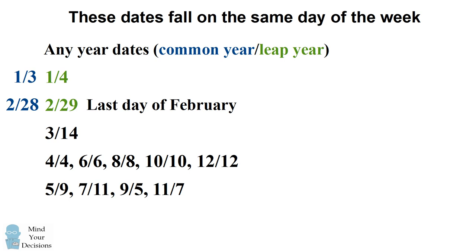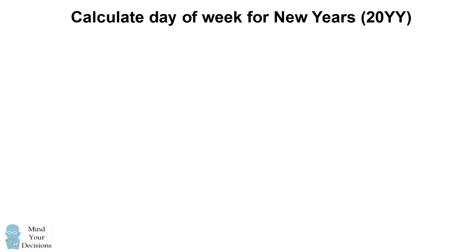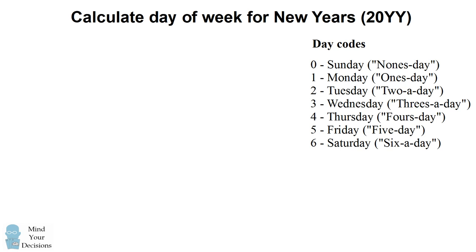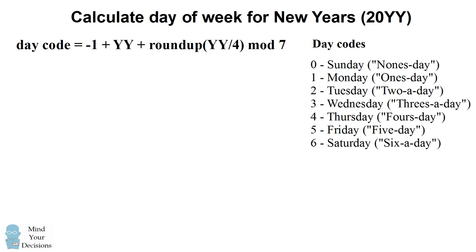In order to apply this method, you need to know when January 3rd or January 4th falls on, so there's a formula for that. I like to think about the day of the week that New Year's falls on, then make the adjustment for January 3rd or January 4th. We start by putting the days of the week in numerical codes, starting with Sunday being 0 and Saturday being 6. Here's the formula for calculating the day code for a year: if you have a year 2000+yy, the day code equals negative 1 plus the year, plus the year divided by 4 rounded up, and you take that whole result modulo 7.